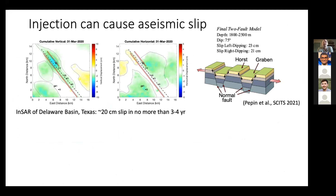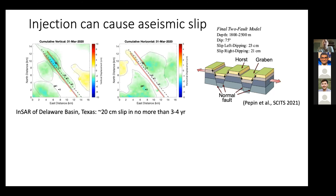Injection can cause seismicity. In many cases that slip is seismic, but in other cases it's likely aseismic. Carissa Pepin, working with Bill Ellsworth and others, examined InSAR data from the Delaware Basin in Texas showing cumulative vertical and horizontal uplift over about a five-year period — a large amount of uplift and subsidence consistent with slip on conjugate normal faults, with slip in the range of about 20 centimeters. The earthquakes there aren't large enough to explain this, so presumably this is a large amount of aseismic slip.